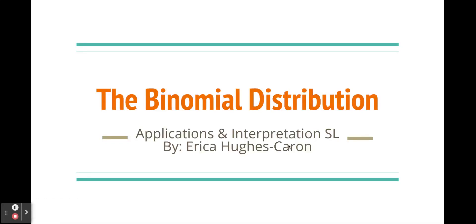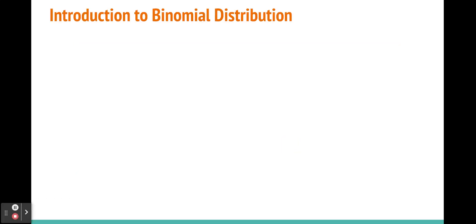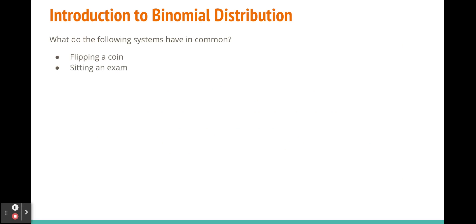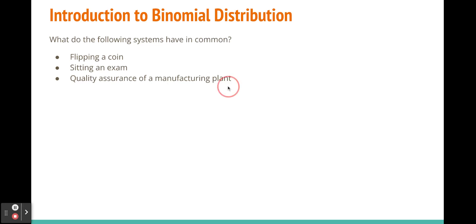In today's video, we're going to talk about the binomial distribution. First, let's think about the following systems and what they have in common: flipping a coin, sitting an exam, or quality assurance for a manufactured plant. If you flip a coin, you get heads or tails. If you sit an exam, you pass or fail. In quality assurance, you also just pass or fail. So all of these are examples of binary events where there are only two possible outcomes.